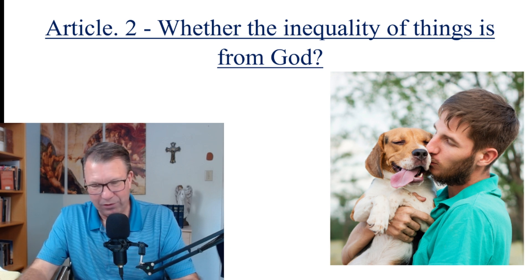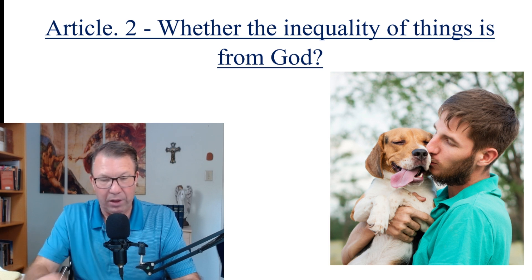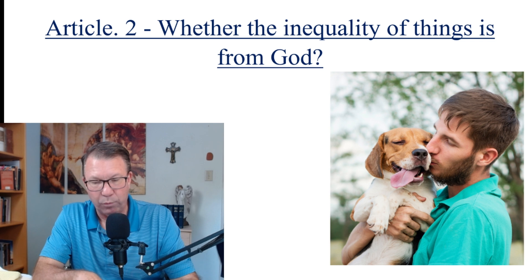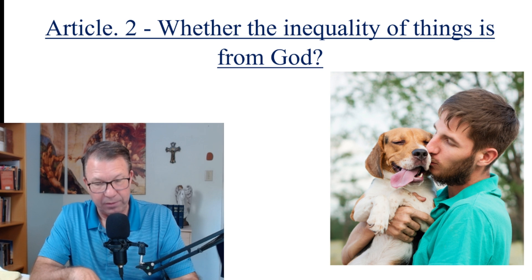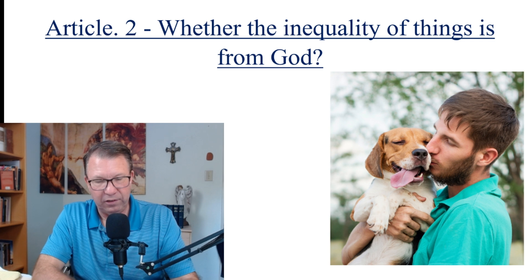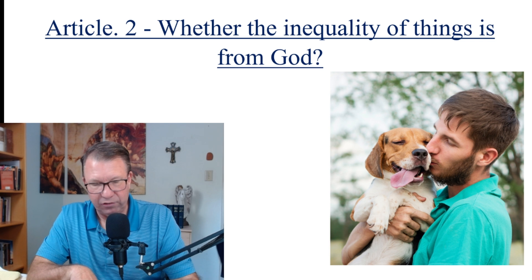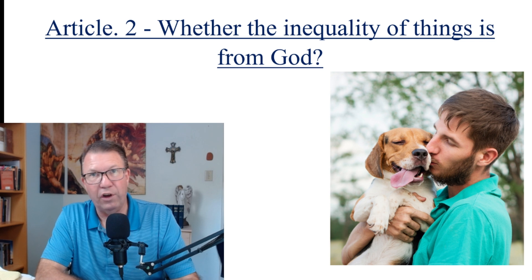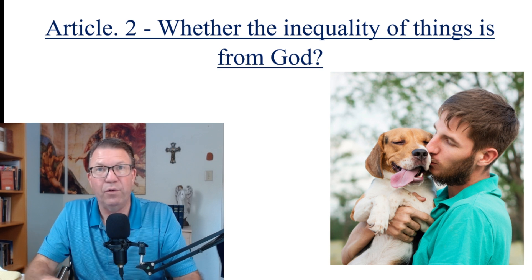So Thomas says, here's Thomas's response. In natural things, species seem to be arranged in degrees as the mixed things are more perfect than the elements and the plants than the minerals and the animals than the plants and men than the other animals. And in each of these, one species is more perfect than others. That seems to be the case. Therefore, as the divine wisdom is the cause of the distinction of things for the sake of the perfection of the universe, so it is the cause of inequality. For the universe would not be perfect if only one grade of goodness were found in things.